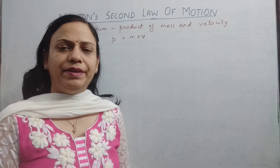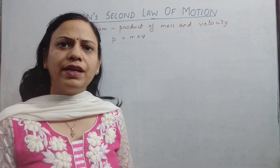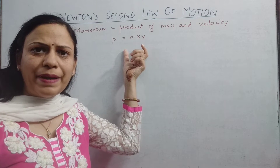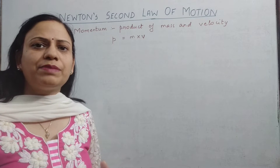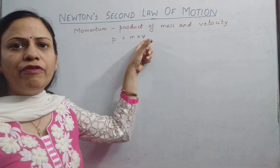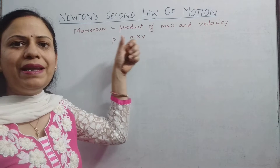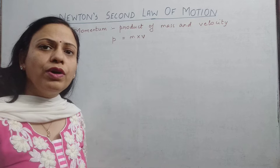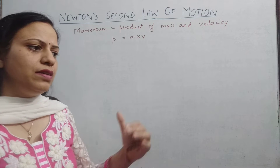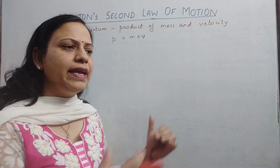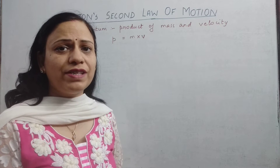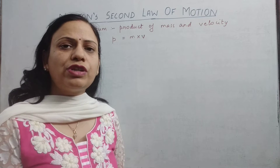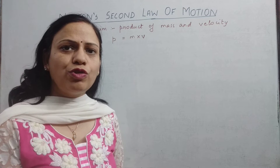To understand this better, suppose we have a car and a truck both moving with the same speed. The car has a smaller mass compared to the truck — a truck's mass is many times that of a car. So the product of the truck's mass and velocity will be greater, meaning the truck has more momentum. If both hit a common target, the truck will cause more damage because its momentum is more. So momentum is somewhat a measure of force: more momentum means more force, less momentum means less force.